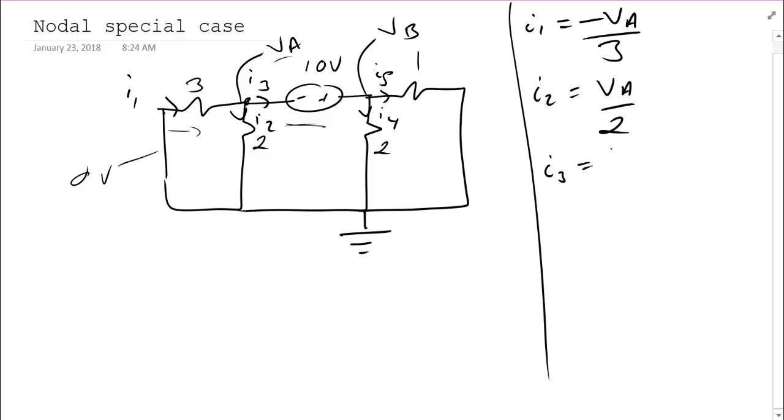I2 is VA over two. I3, though, I don't have a nice way to write it down. In a resistor, I know by Ohm's law that V equals IR. However, I3 is moving only through a voltage source. So I don't have the ability to write down a nice answer for what I3 is. We're going to have to find a different way. However, I3 is the only problematic current. So I can still write down equations for I4 and I5. I4 is VB over 2, and I5 is VB over 1.